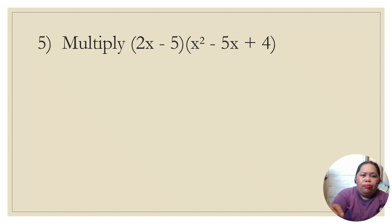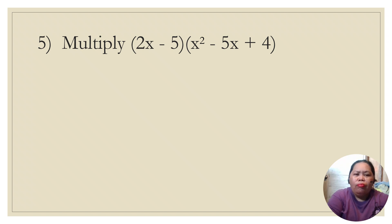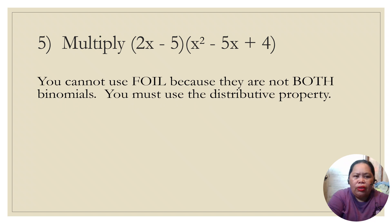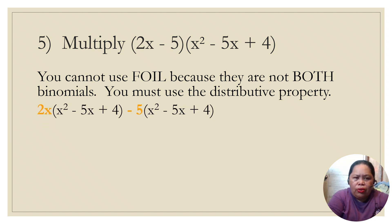Now let's multiply a binomial and a trinomial — for example, (2x − 5) times a trinomial. You cannot use FOIL because they are not both binomials, so you must use the distributive property. We distribute each term of the binomial across every term of the trinomial.